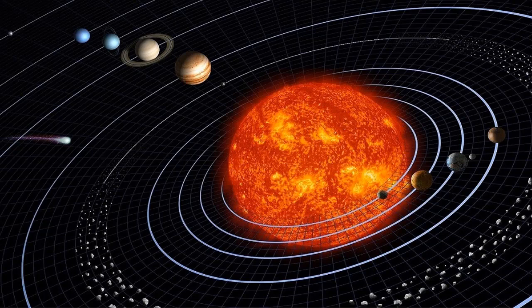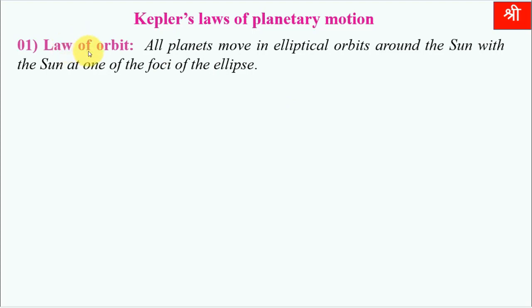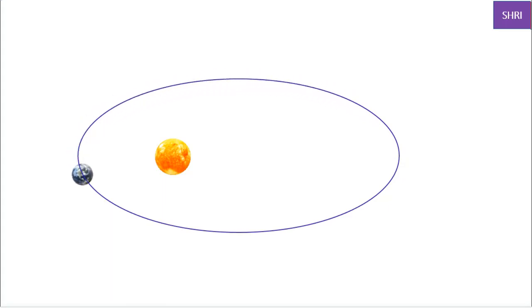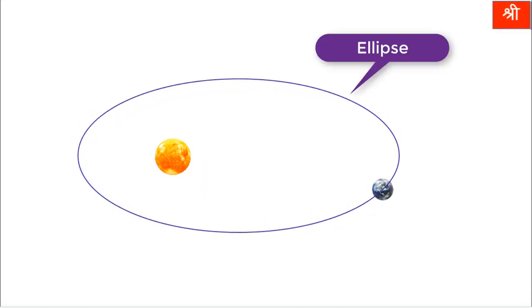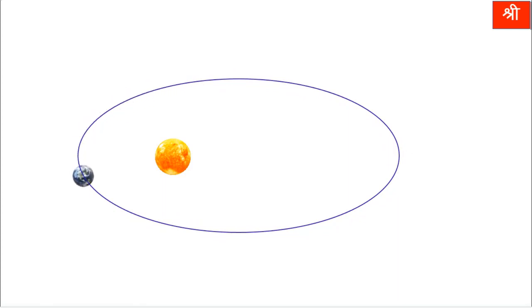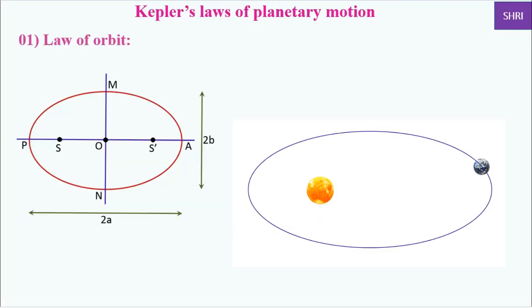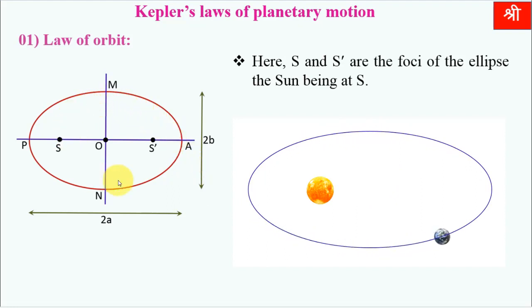Kepler's first law is also called the law of orbit. All the planets move in elliptical orbits around the sun, with the sun at one of the foci of the ellipse. So the Earth revolves around the sun in an elliptical orbit, not a circular orbit. This is an ellipse — an oval shape. S and S-dash are the two foci of the ellipse, with the sun being at S.